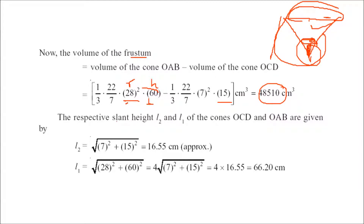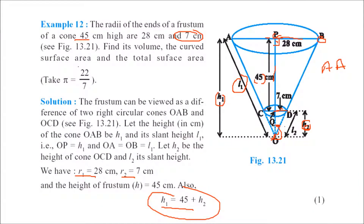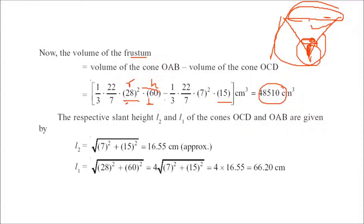Now we come to the slant heights l2 and l1. l1 is the greater one and l2 is the smaller one. l2 can be found using √(7² + 15²), and l1 can be found using √(28² + 60²). So l2 = √(49 + 225) and l1 = √(784 + 3600). Both slant heights l1 and l2 are now obtained.